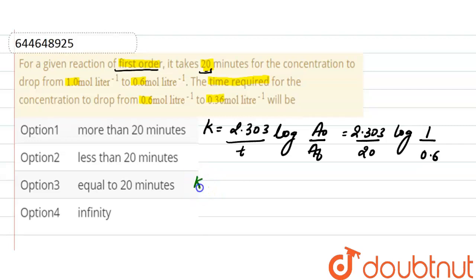Moving on to second data, k equals 2.303. Here we have to find out time required. Log of initial concentration here is 0.6 and final concentration is 0.36.